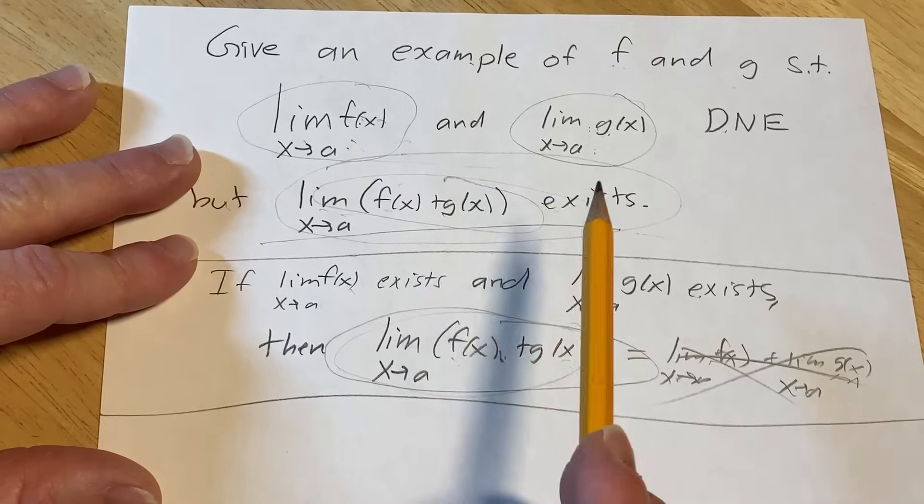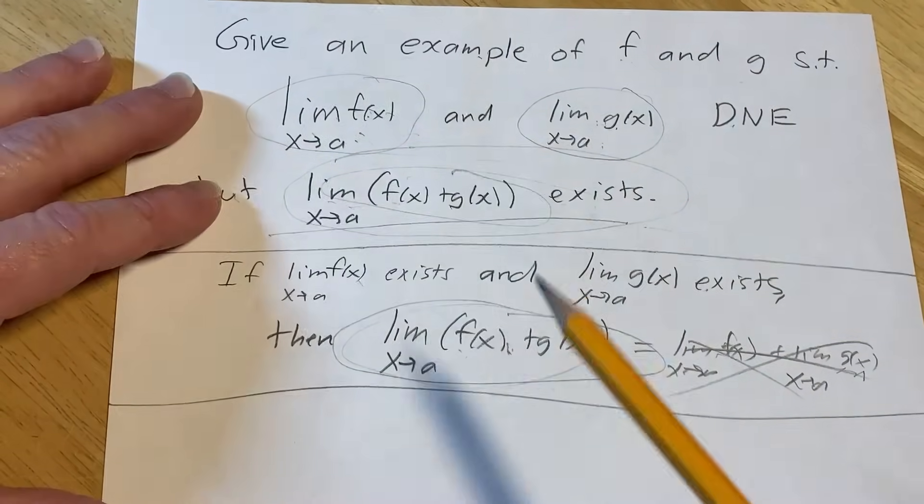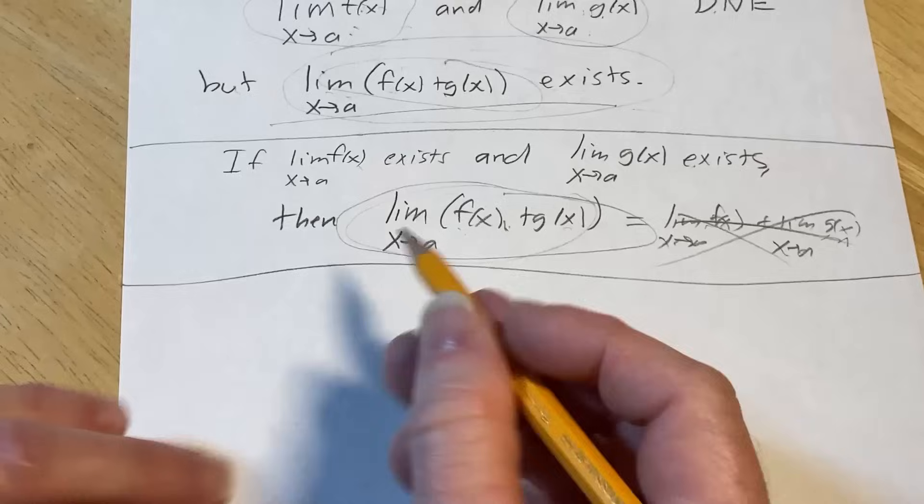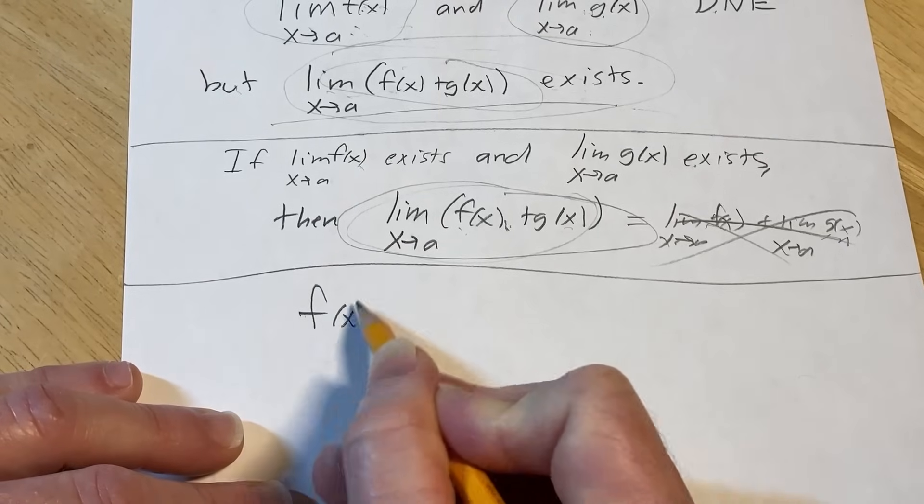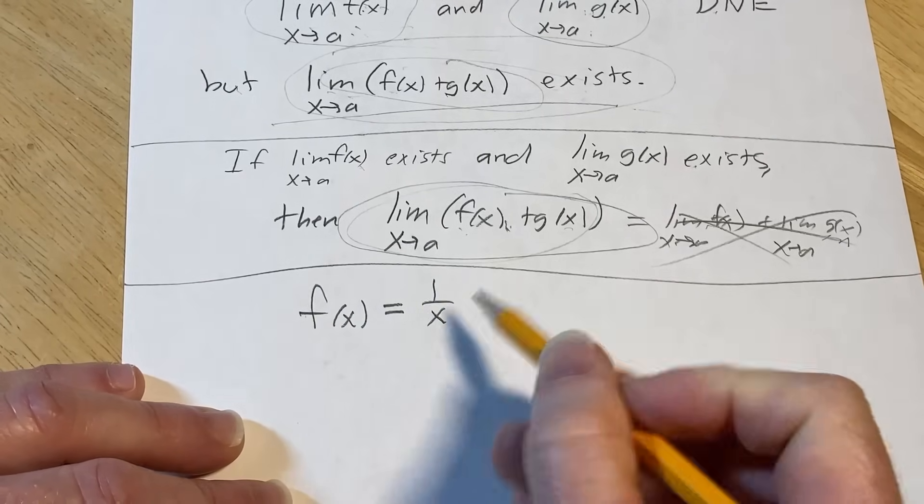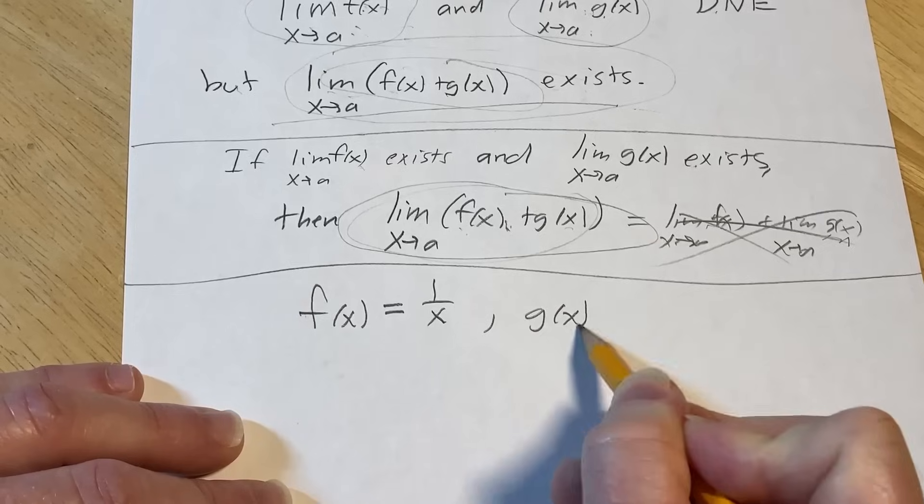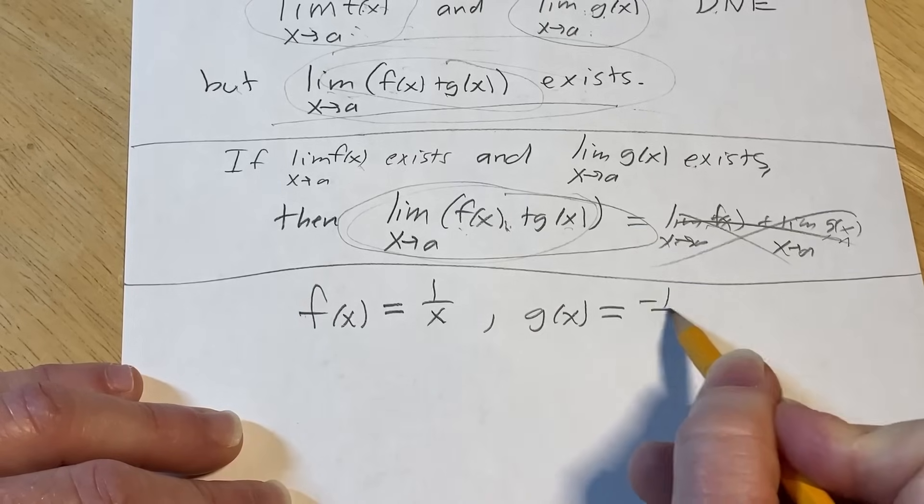So let's go ahead and solve this problem. The easiest way to do it is this way. Let's take f of x equal to 1 over x, and let's take g of x equal to negative 1 over x.